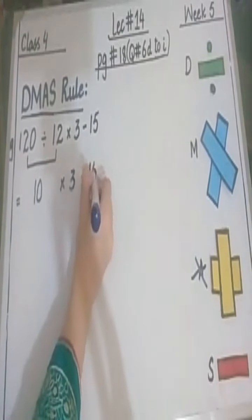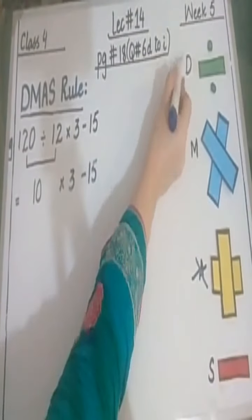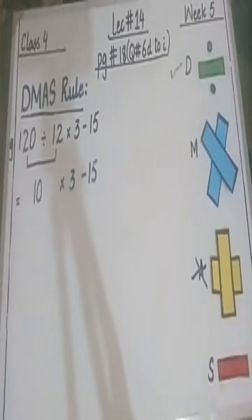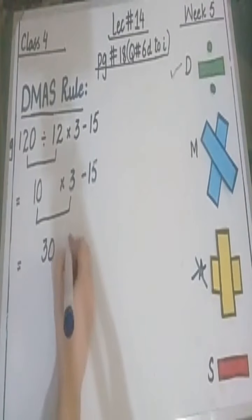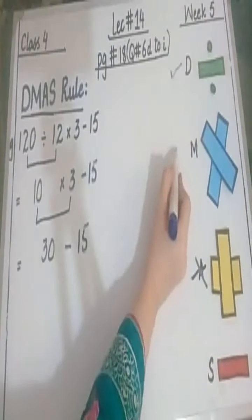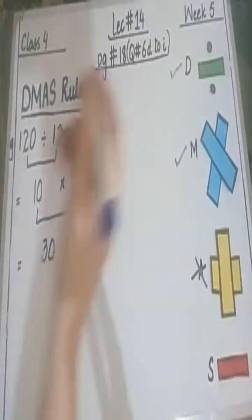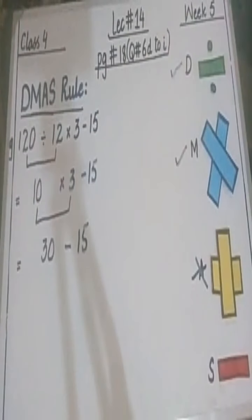Now, the division step has been completed, so we mark a tick here. The second step is multiplication. Class, the multiplication sign is here: 10 times 3 is 30, and minus 15 will be written as is. Now the multiplication step has also been completed.